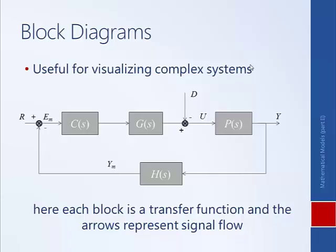If these were all differential equations, it would be much more challenging. A couple of other elements of a block diagram worth explaining are summing junctions. For example, in a summing junction, the signal coming in on the positive sign is our reference R, and the signal coming in on the negative sign is our measured output Y_M. So E_M is the positive signal minus the signal on the negative side.